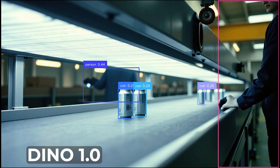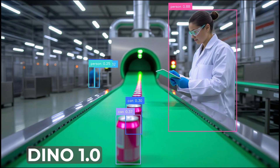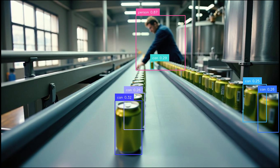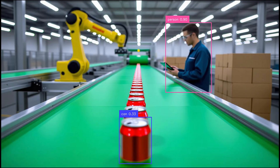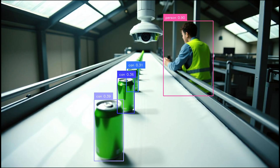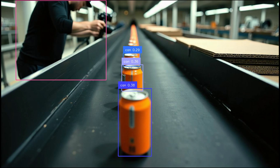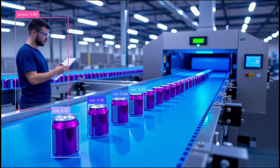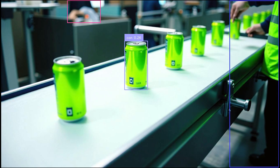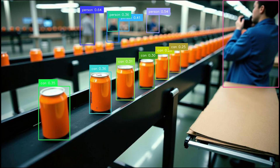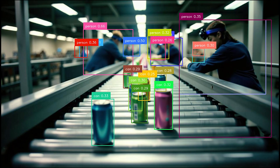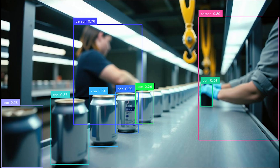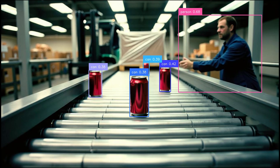For instance, with Grounding DINO, we can describe the objects we are interested in and generate labeled bounding boxes. DINO 1.0 is open source and can be run 100% locally, while DINO 1.5 and DINO X have better performance but are commercial products available as APIs.